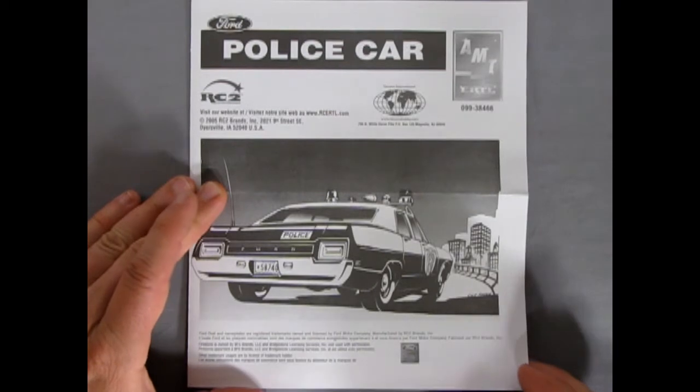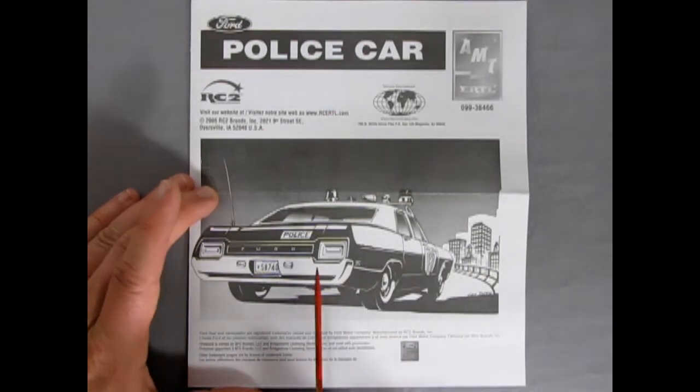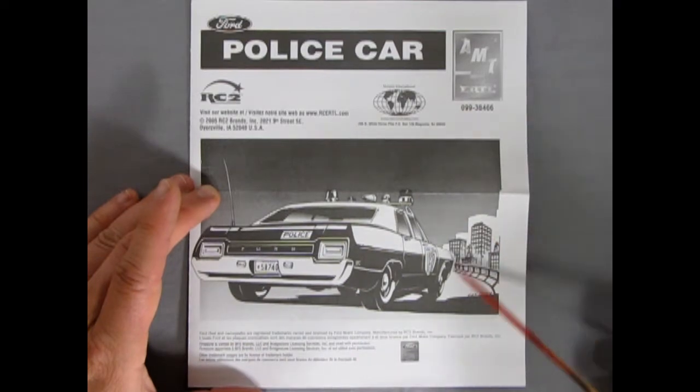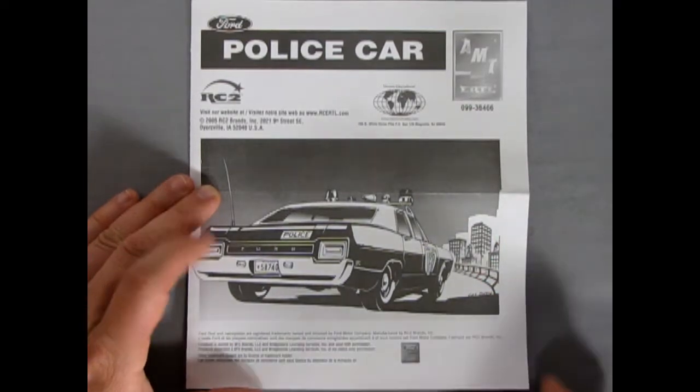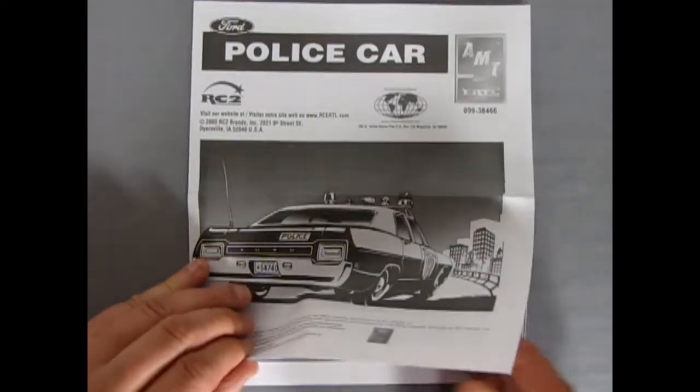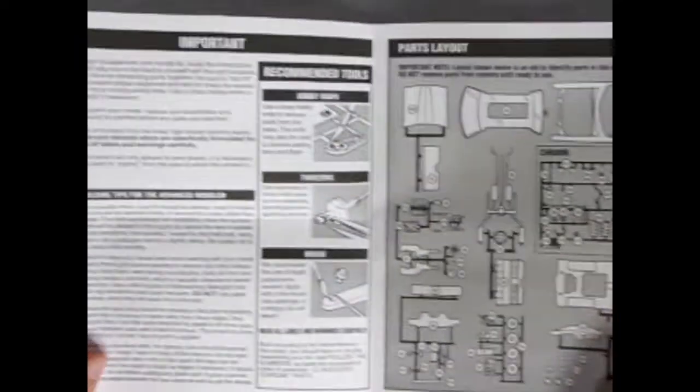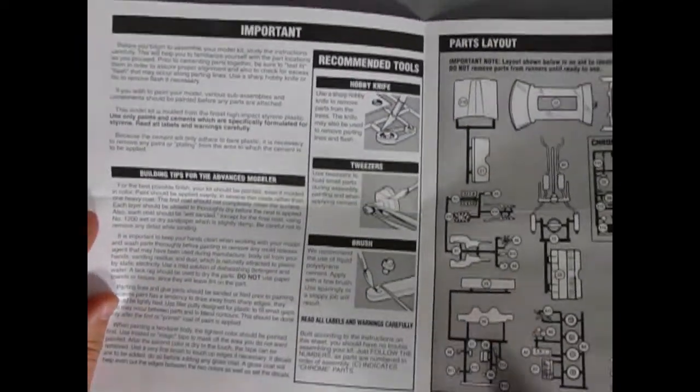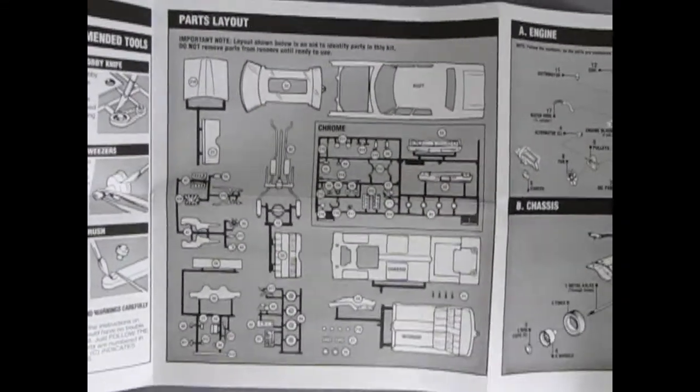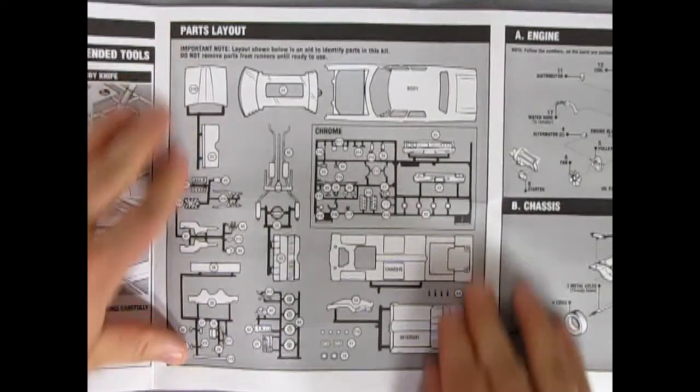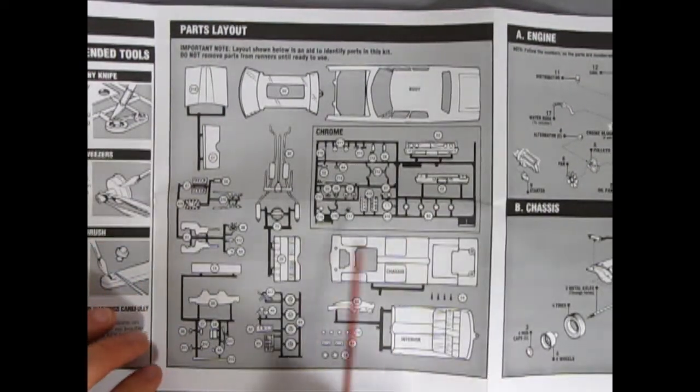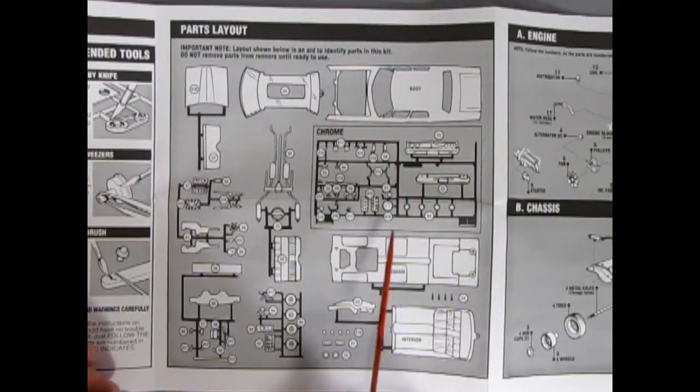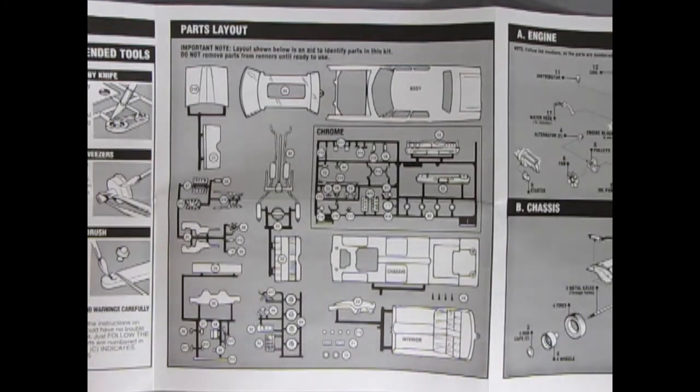Here we've got the instruction sheets for the police car. As you can see, we got that great drawing of our squad car in action going down the streets of Chicago or wherever they're going. This is a big fold-out just like a Mad Magazine. There's the important stuff we need to know as well as a parts layout, which is good. I think all instruction sheets should have these or at least under the box like the new Round Two kits do.